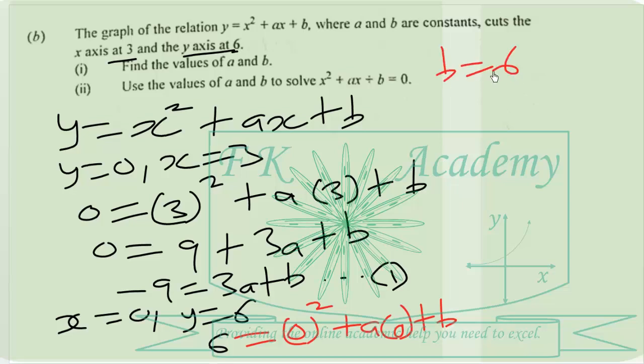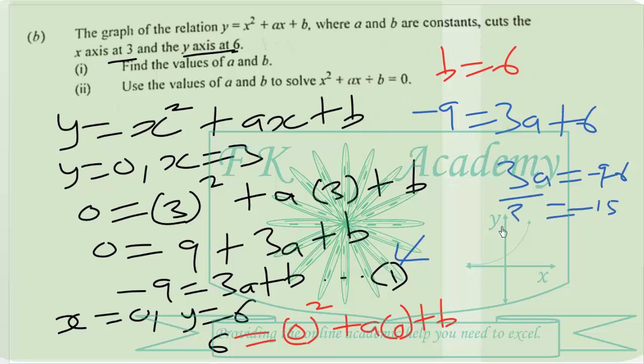That will give us b equal to 6. If b equals 6, then we can put this into equation 1 to find the value of a. We have negative 9 equals 3a plus 6, so 3a equals negative 9 minus 6, which is negative 15.